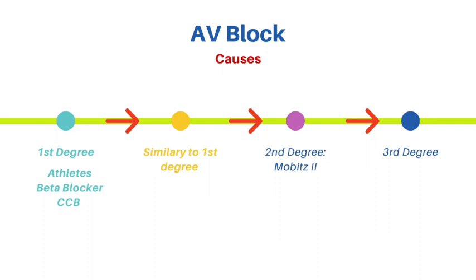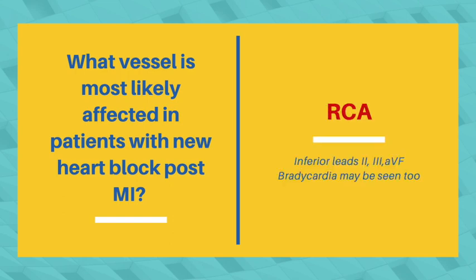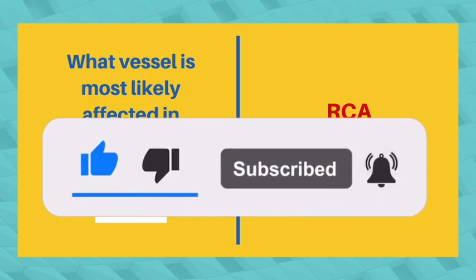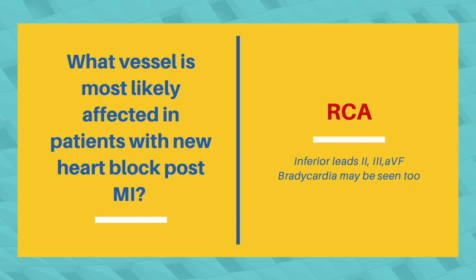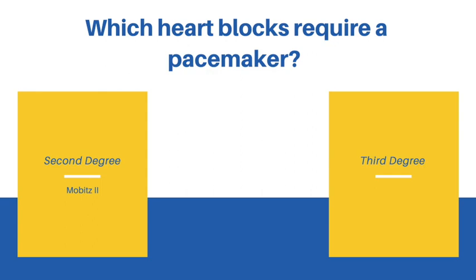Rapid review: What vessel is most likely affected in patients with new heart block post myocardial infarction? The right coronary artery. If you see an ECG with inferior lead changes in leads II, III, and aVF, this is due to an infarction of the right coronary artery, and these patients can also present with bradycardia. Which heart blocks require a pacemaker? Second degree AV block Mobitz type 2, and third degree AV block.